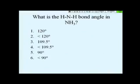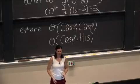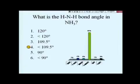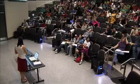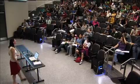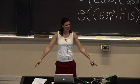Let's use a clicker question: what is the HNH bond angle in ammonia? The answer is less than 109.5 degrees — it's actually 107 degrees. This is because the lone pair pushes down on the bonding electrons, compressing the bond angles slightly below the ideal tetrahedral angle.